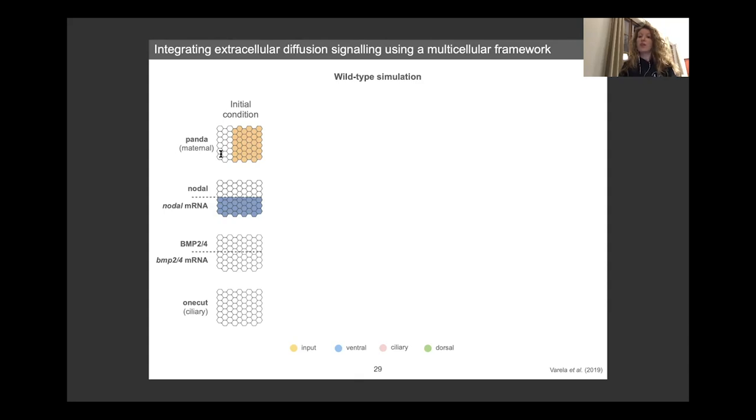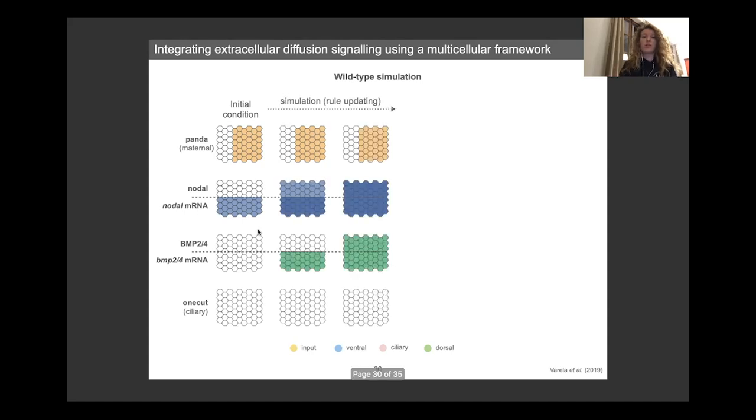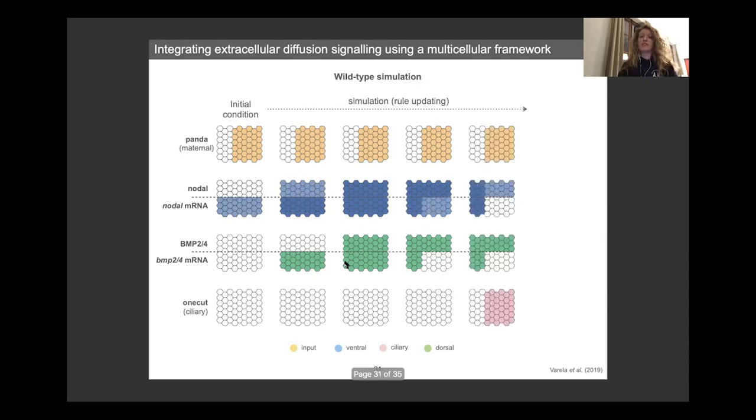We start with a maternal repressor, which is PANDA, and nodal mRNA being present all around the embryo. And starting from this, we can just let the model run and propagate both the diffusion and the intercellular rules. In the first step, you can see that the expression of nodal and BMP24 gets spread across the whole embryo because we know that in the model, nodal is an activator of both nodal itself and BMP24.